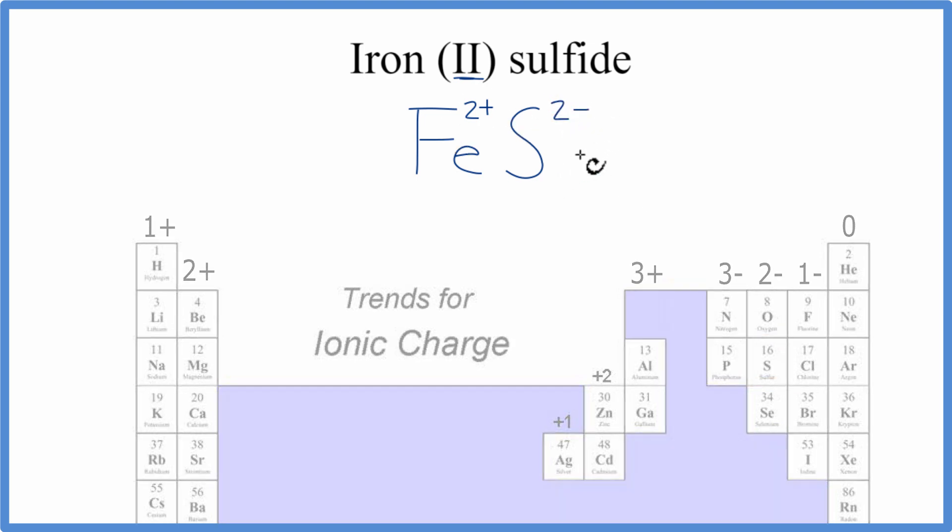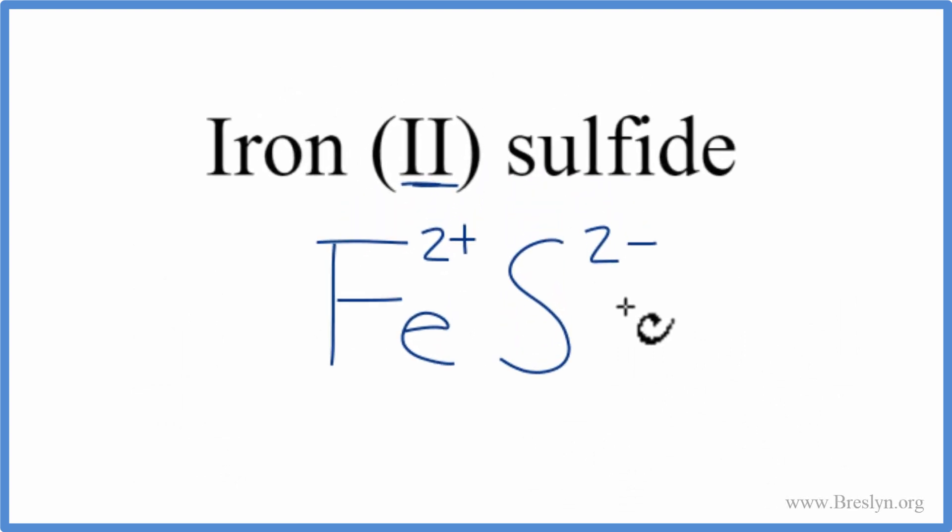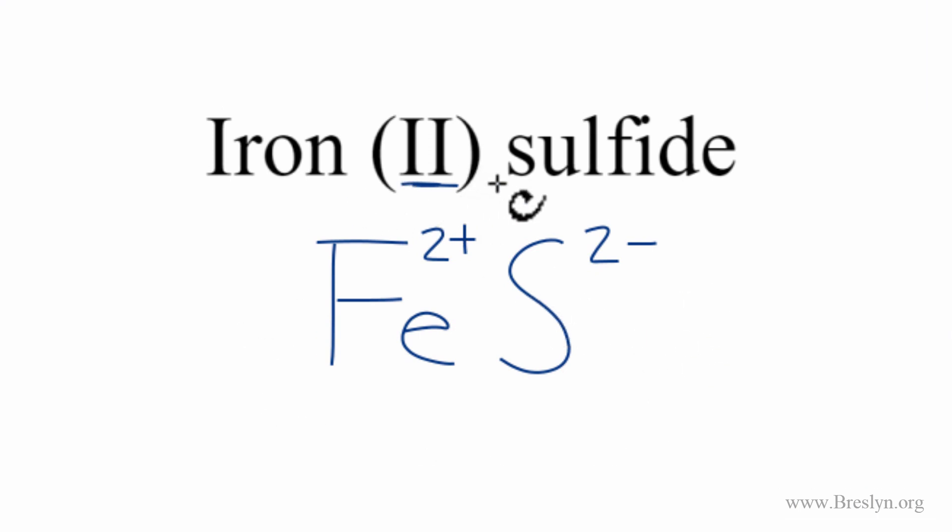So these charges need to add up to 0, so we have a net charge of 0. 2+ and 2- gives us 0, so this is the formula for iron (II) sulfide. Let's get rid of the charges to clean it up.